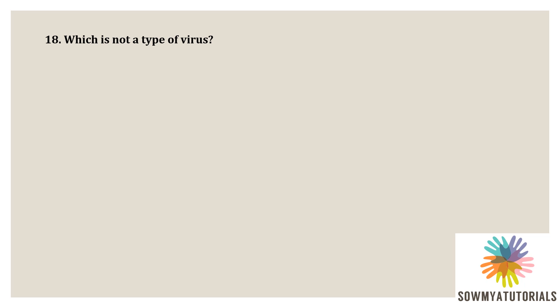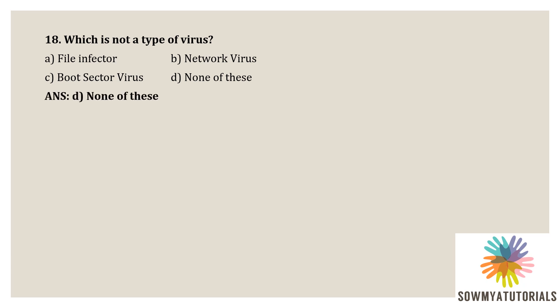Next question: which is not a type of virus? Option A - file infector, option B - network virus, option C - boot sector virus, option D - none of the above. Viruses can be classified into a number of different types such as file infector virus, network virus, and boot sector virus. The correct option is option D, none of the above, because file infector is also a virus, network virus is also a virus, and boot sector virus is also a type of virus.